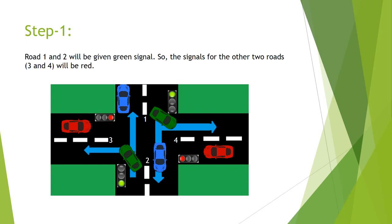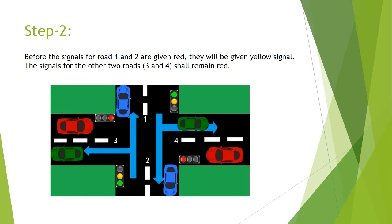Then, before the signal for roads 1 and 2 go red, there should be a yellow signal. So in step 2, we are providing a yellow signal. The rest of the lights will stay the same as step 1, but there will be yellow signals on roads 1 and 2.